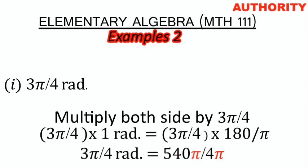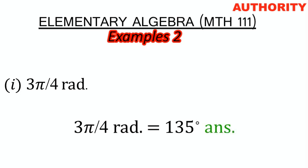180 times 3π gives us 540π. So we have 540π all over 4π. The π cancels, leaving 540 over 4. 540 divided by 4 gives us 135 degrees. So the conversion of 3π/4 radians is 135 degrees.